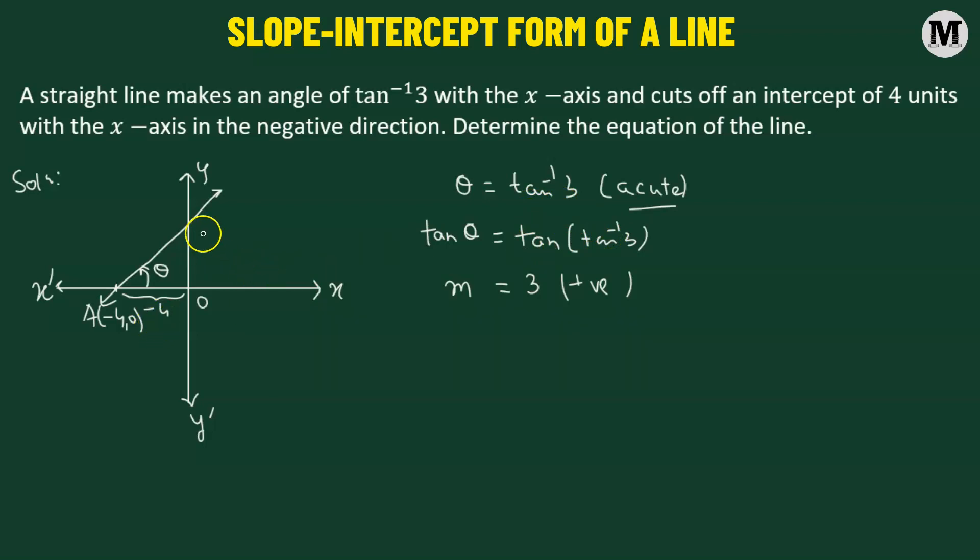Now we have here is the x-intercept, but what we need is actually the y-intercept. So let's call this particular point as B with the coordinate 0 comma C. We first find out the coordinate of point B.